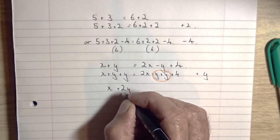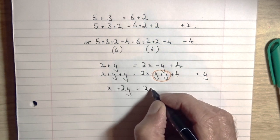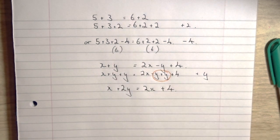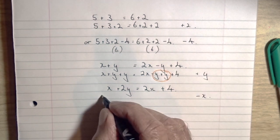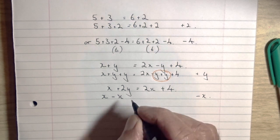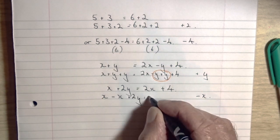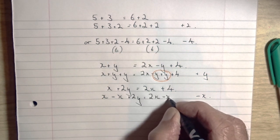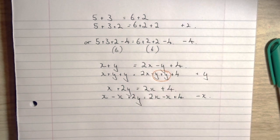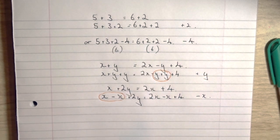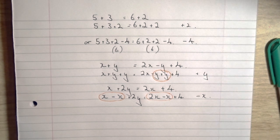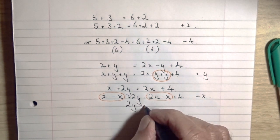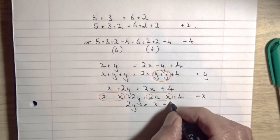So we've got x plus 2y equals 2x plus 4. We now have a lone x on the left hand side. By subtracting x from each side, we will on the left hand side have x minus x which cancels out, and 2y remains by itself. On the right hand side we've got 2x minus x which is x, so we're ending up with a much simplified equation: 2y equals x plus 4.